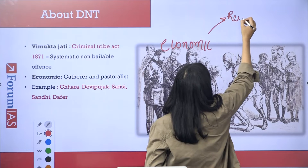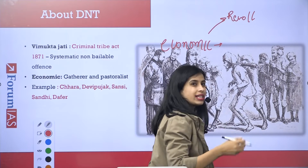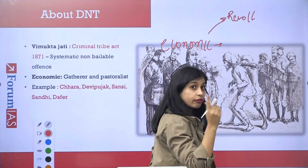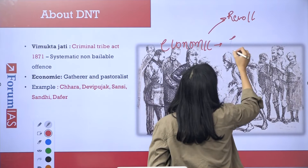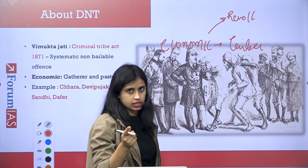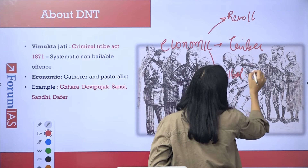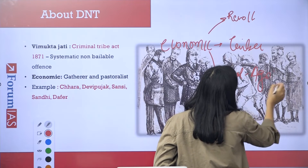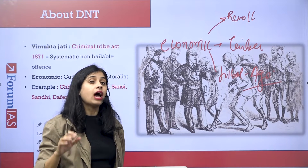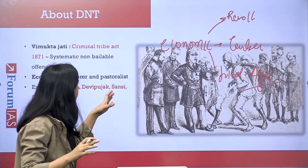The British wanted forests for timber, and they also wanted tribals to shift to cultivating cash crops like cotton and indigo to maximize raw material extraction. So they started pressuring tribals to stop engaging in activities like gathering, shifting cultivation, and pastoralism. In 1871, they passed the Criminal Tribes Act.